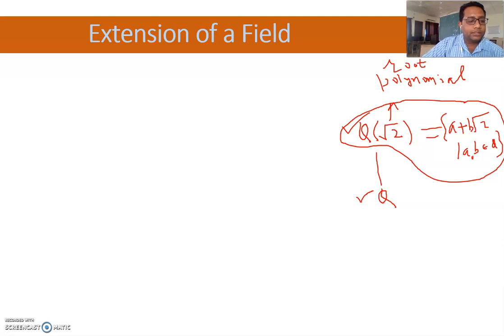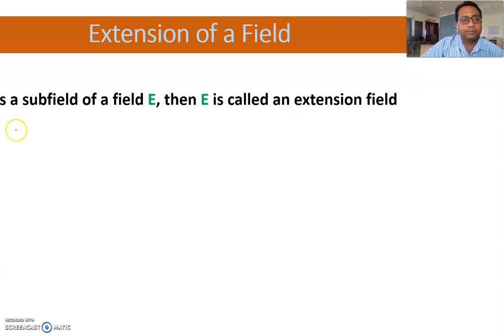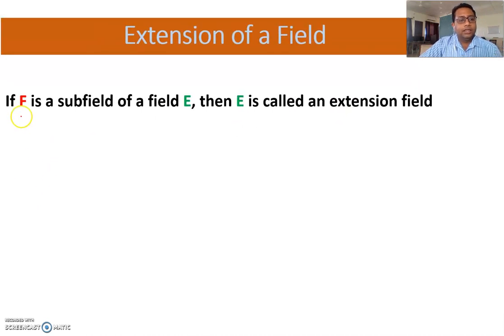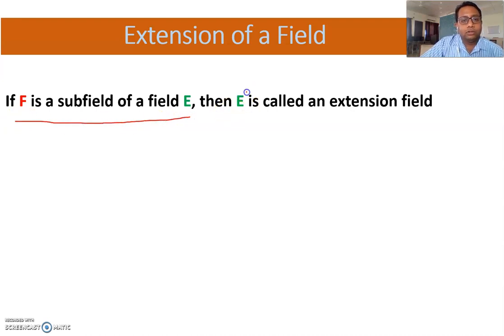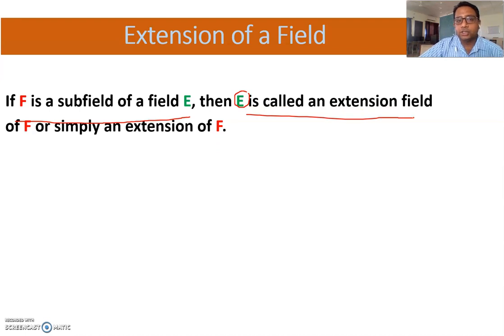Extension of a Field के बारे में बात करते हैं। जैसे Q(√2) और Q थे — Q(√2) जो Q से बड़ा है, वो उसकी extension है। Definition: अगर F एक subfield है field E का, तो E को हम F का extension field बोलेंगे — simply यह कहेंगे कि E, F की एक extension है।